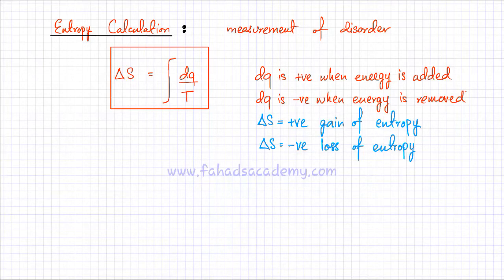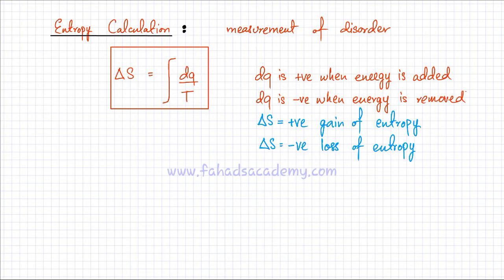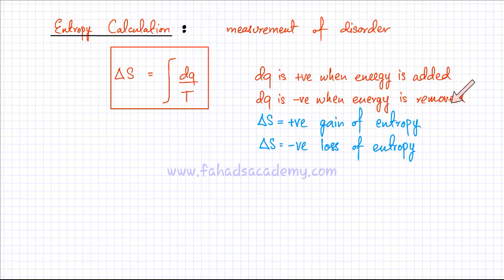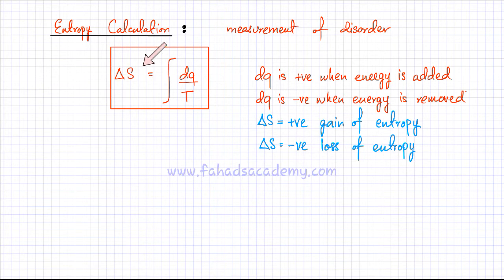In this video lecture, we're going to discuss entropy calculation and come up with a formula that gives us a quantitative value for measuring the disorder of a system. That formula is delta S equals dQ over T, where delta S is the change in entropy of the system, dQ is the change in energy of the system, and T is the constant temperature in Kelvin.